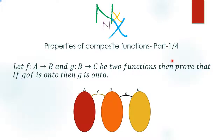Hi guys, welcome to a new series of lectures based on properties of composite functions. In this lecture series we will see four theorems based on composite functions. So let us start with the first one. Let f be a mapping from set A to B, and g be a mapping from set B to C, as two functions.